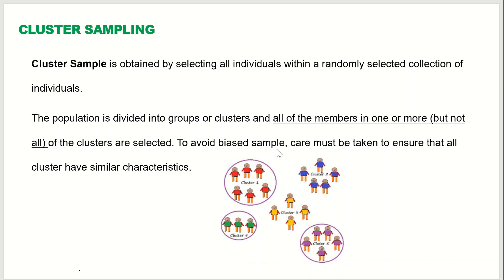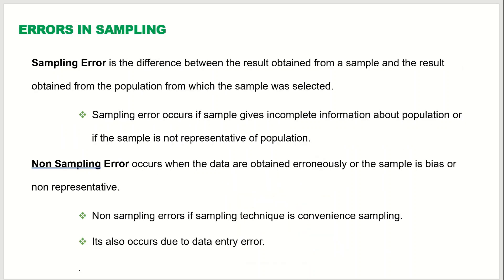All members in one or more — but not all — clusters are selected. Out of five clusters we select three. To avoid a biased sample, care must be taken to ensure that all clusters have similar characteristics. The members of each cluster should have some sort of uniform characteristic, and then from the clusters we've formed, we select the required number. That technique is called cluster sampling.